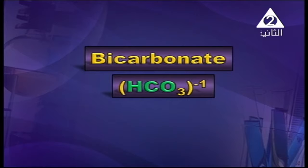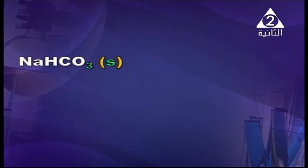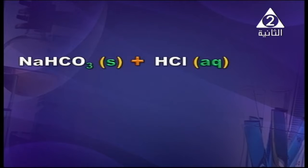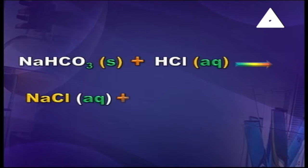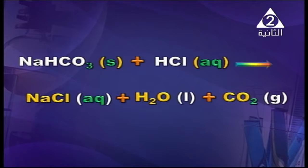Bicarbonate — HCO₃⁻, negative one. What is its reaction? Sodium bicarbonate — NaHCO₃. The valency of sodium is one, valency of bicarbonate is one, so NaHCO₃. We add HCl — hydrochloric acid — this is the primary test, the important test number one. It gives sodium chloride, an aqueous solution, plus water, plus carbon dioxide. When you say CO₃, it gives CO₂ gas. This is the test for carbonate and bicarbonate.